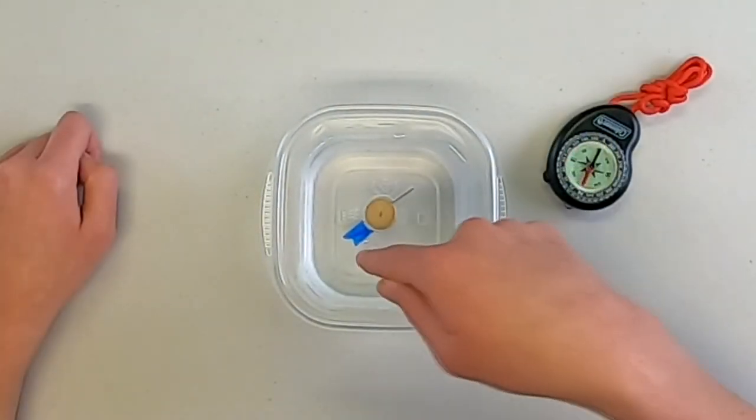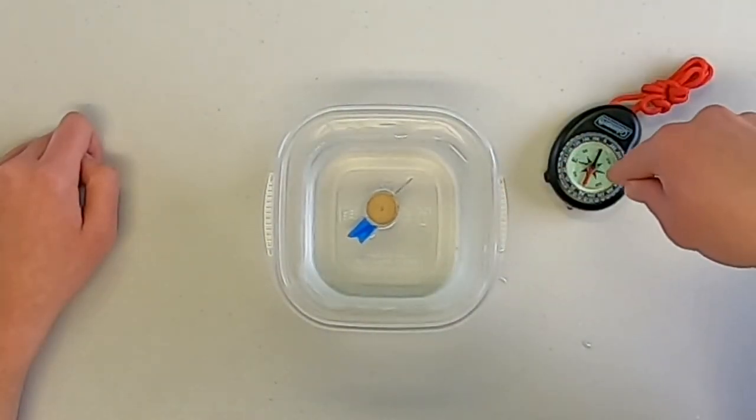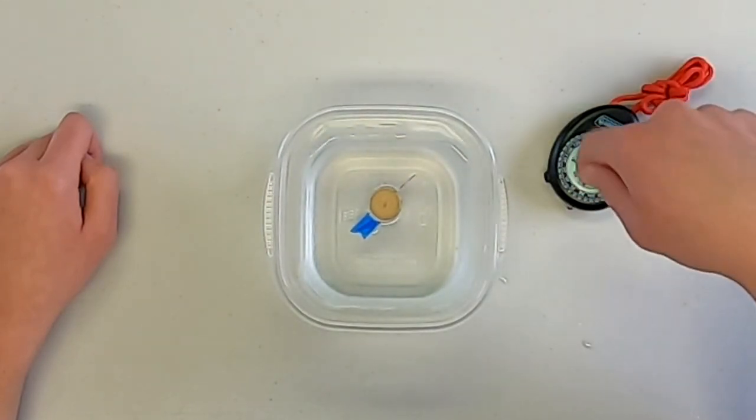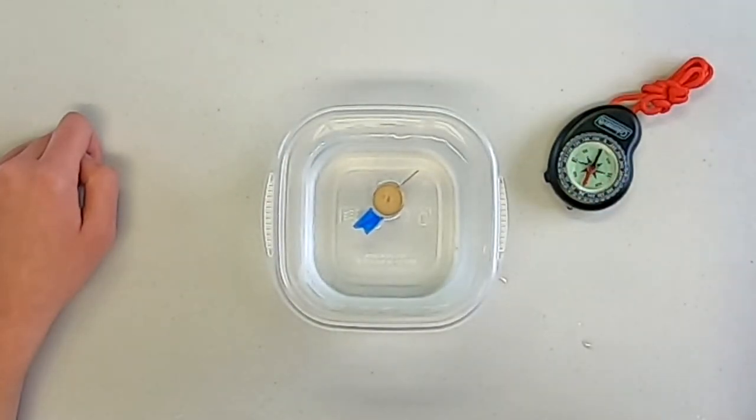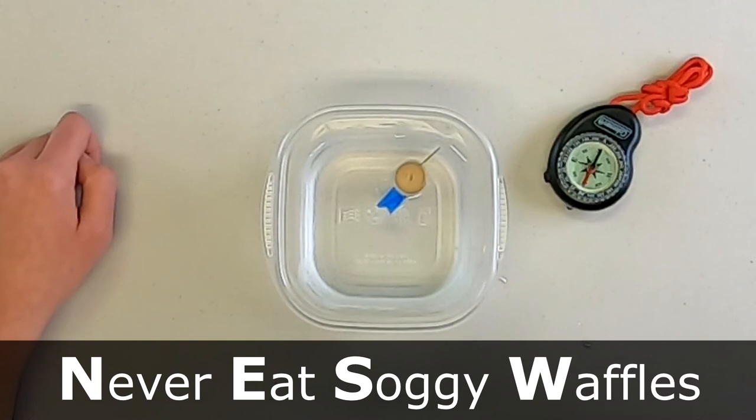Notice how our compass only tells us which way is north, while the other compass has all four directions. That's not a problem because as long as we know which way is north, we can figure out the other three. You can remember the order by the phrase, never eat soggy waffles.